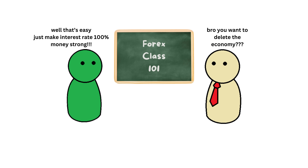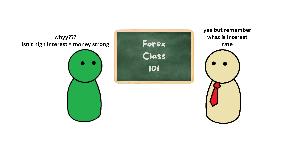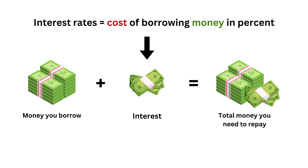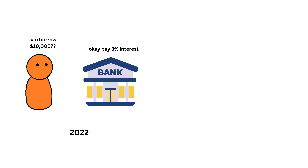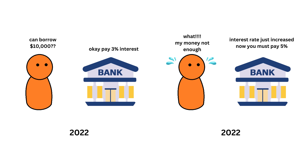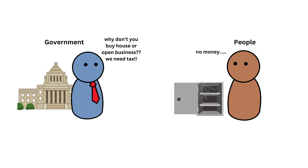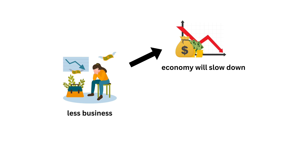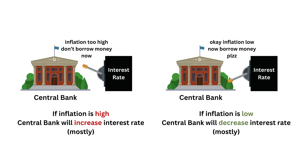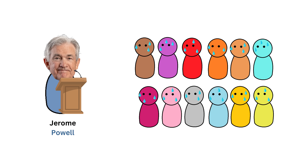But a country cannot just make its interest rates as high as possible to attract investors. Remember, interest is the cost of borrowing money. High interest rates also mean it becomes more expensive for people and businesses in that country to borrow money. If borrowing becomes expensive, fewer people buy homes or start businesses. This can slow the economy and lead to unemployment. So, the central bank needs to increase and decrease the interest rate based on the country's situation. And that's why everyone is afraid of this guy when he announces the U.S. interest rate.